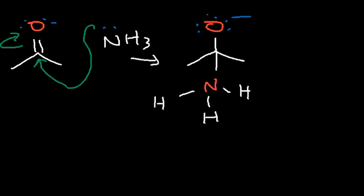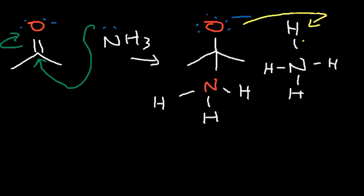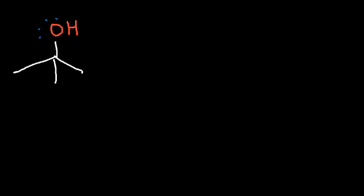To get the imine, we need to get rid of the oxygen, but right now it's a terrible leaving group. We need to transfer two protons to it to make it a good leaving group — when oxygen has a positive charge, it becomes a good leaving group. We can use the ammonium ion in solution to transfer a hydrogen onto the oxygen, giving us a hydroxyl group. Now the nitrogen has four bonds and carries a positive charge, while NH4+ loses a hydrogen and becomes NH3 again.